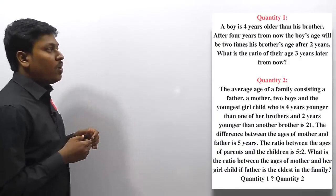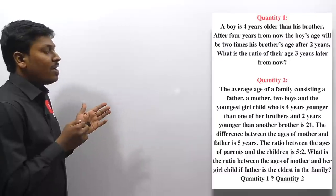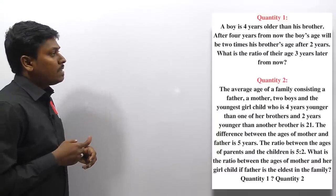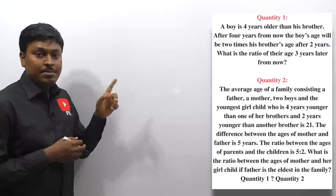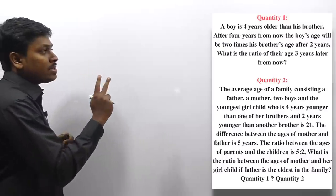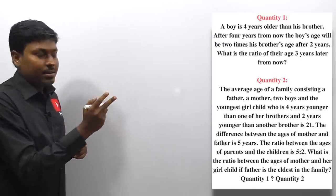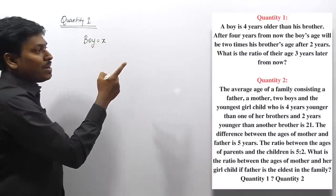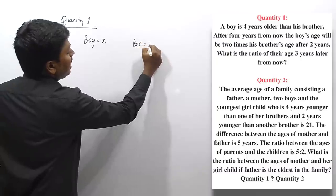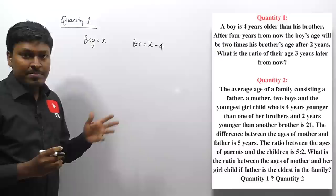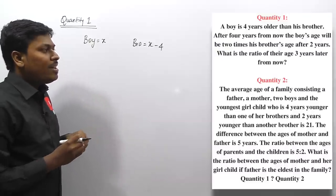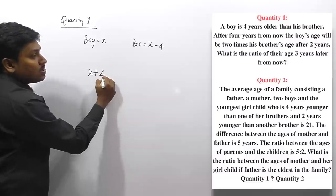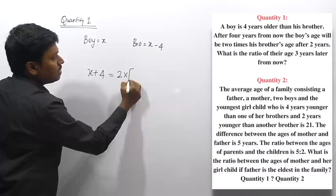Question four, quantity one: a boy is 4 years older than his brother. After 4 years, the boy's age will be twice his brother's age after 2 years. Let boy's age = x, brother's age = x − 4. After 4 years: x + 4 = 2(x − 4 + 2).